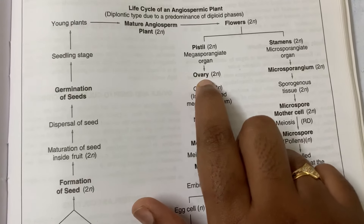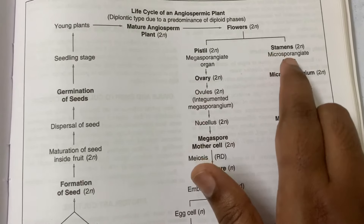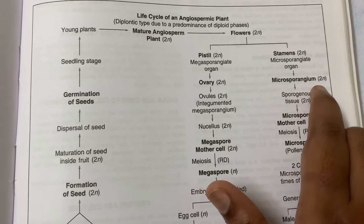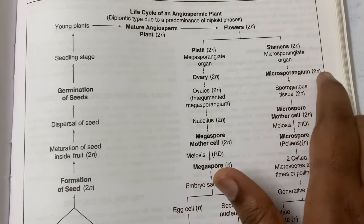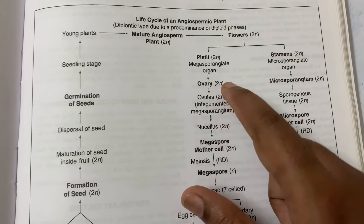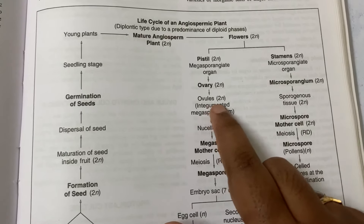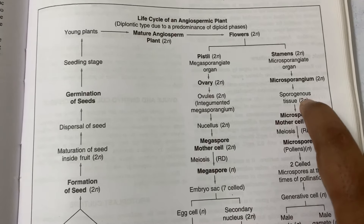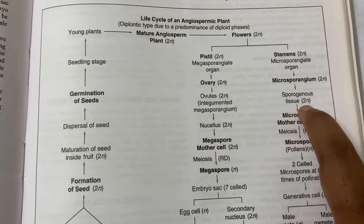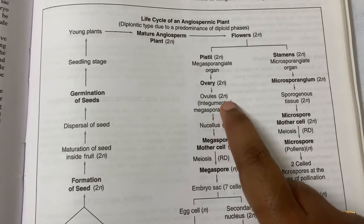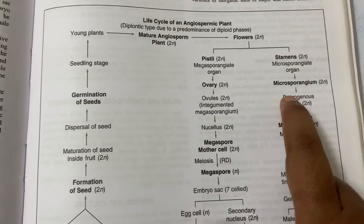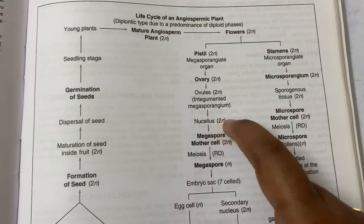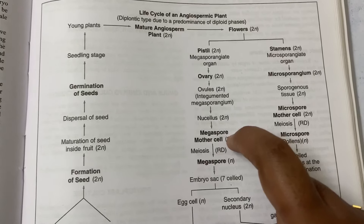In the megasporangiate organ we have the ovary, and inside the ovary we have the ovules. In the microsporangiate organ we have the microsporangium, which is 2n. The ovary is also diploid, the microsporangium is also diploid, and the ovules inside the ovary are again diploid. Inside the anther will have the sporogenous tissue, which is again diploid. So from here we have the megasporangium and the microsporangium, and from the nucellus the megaspore mother cell will regenerate.